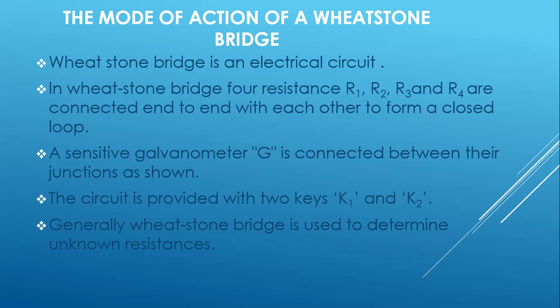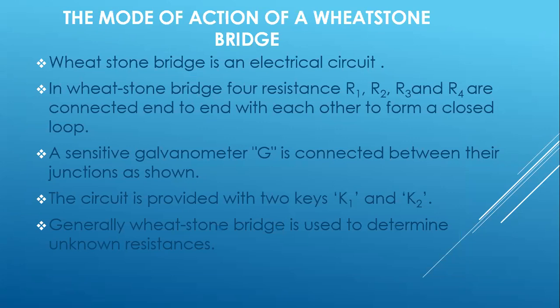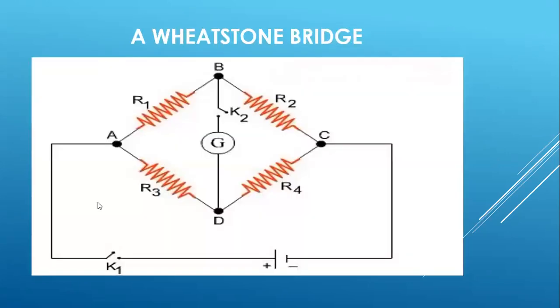A sensitive galvanometer, denoted by the letter G, is also connected between the junctions as shown. Here are resistor one, resistor two, resistor three, and resistor four, offering resistance one, resistance two, resistance three, and resistance four. The galvanometer is connected between them. The circuit is also provided with two keys, K1 and K2. K1 is outside the loop of all the resistors, and K2 is placed after the galvanometer.